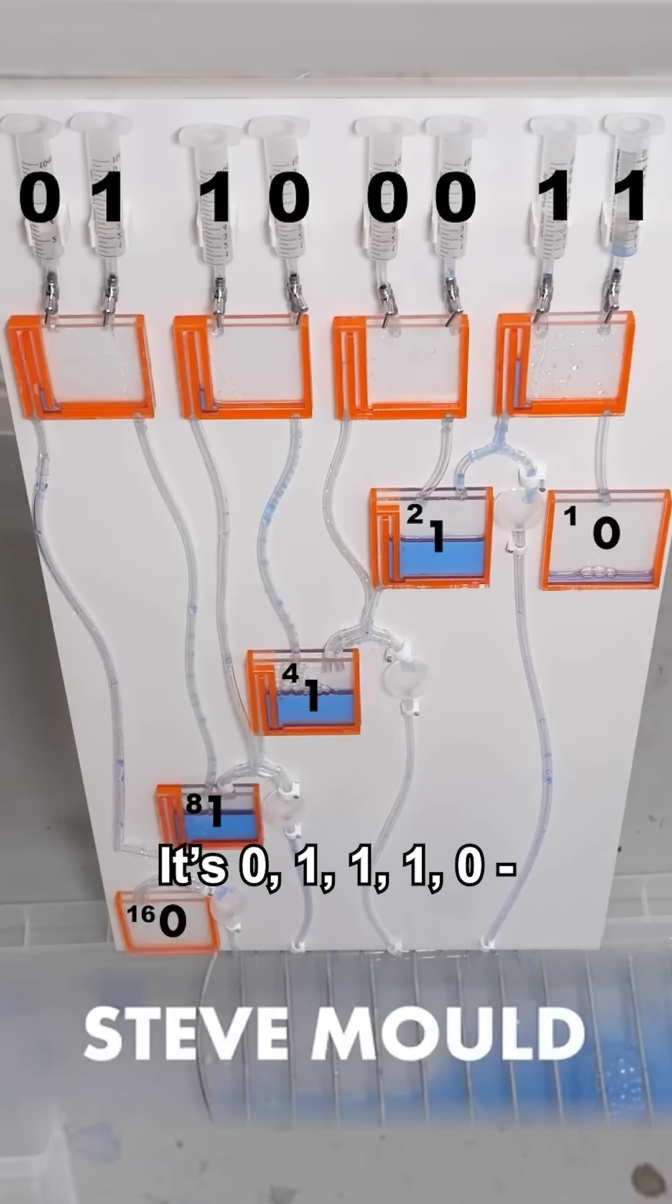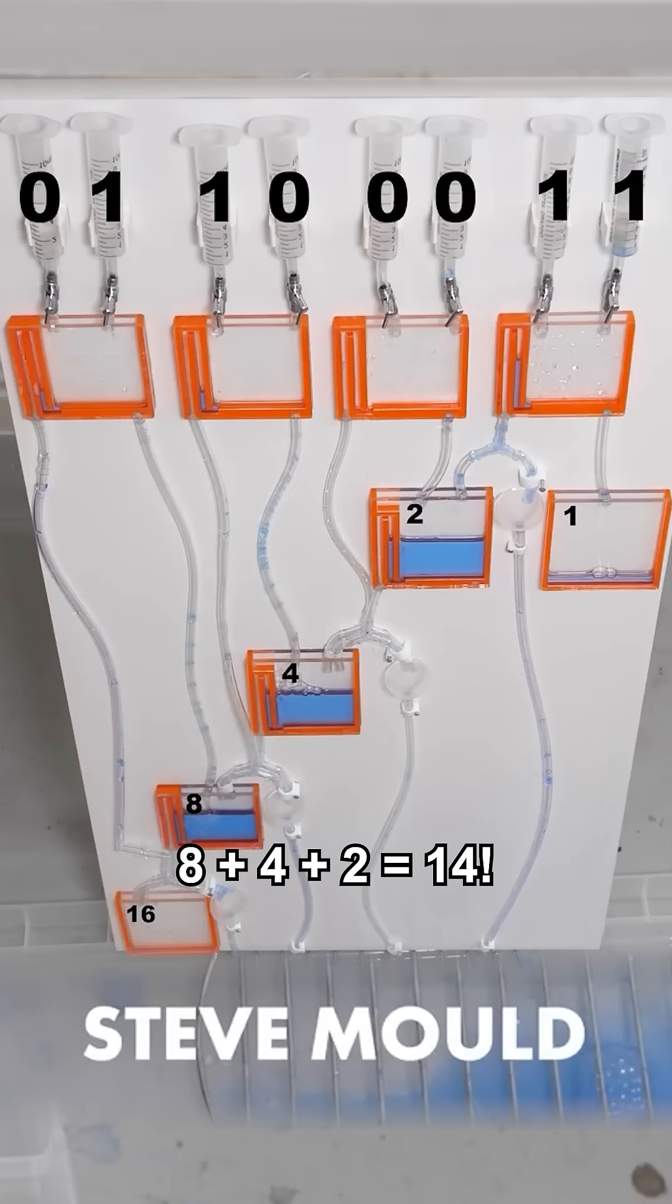It's zero, one, one, one, zero, which is eight plus four plus two, which is 14. What were we adding together again? Nine plus five. It's 14, yay.